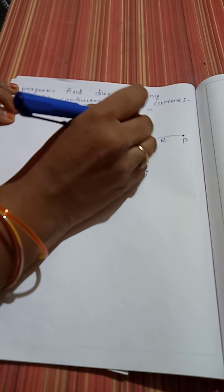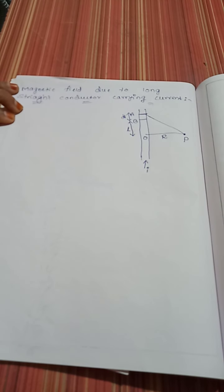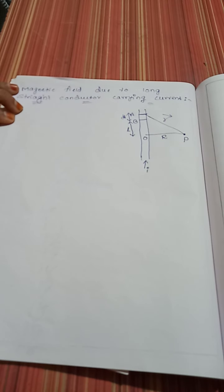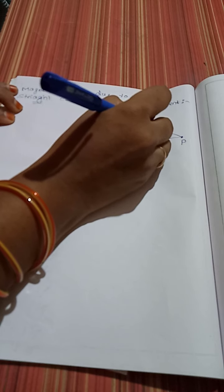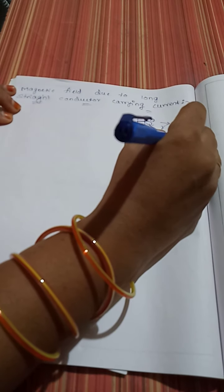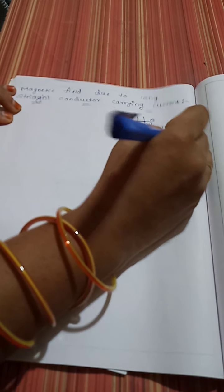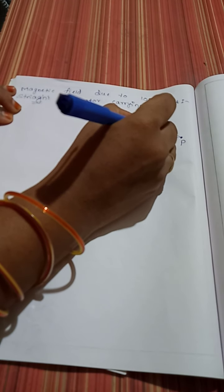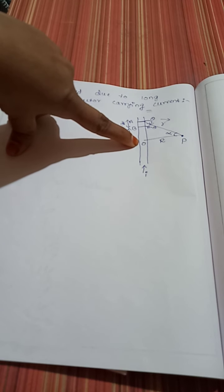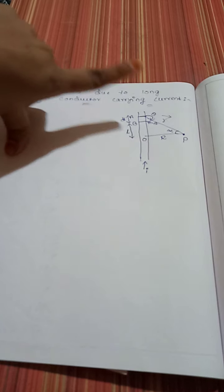We are joining element AB and point P. Let this distance be small r. Let theta be the angle made by the element with a straight line joining the element to point P. Let the angle between OP and the line APB be alpha. This angle becomes 180 minus theta, and O is the foot of the perpendicular from point P.